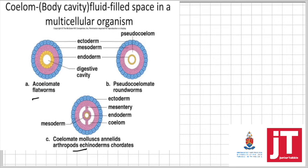Again here, acoelomate — the organism does not have a coelom, as you can see it's not there in the picture. Pseudocoelomate — sometimes you might be tested on this. Pseudocoelomate is a false coelom. It's not actually a coelom.